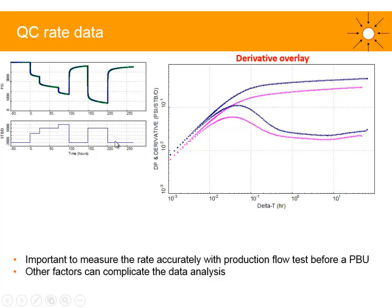In this case, what we have is an underestimated rate. Remember that we plot the rate-normalized pressure — delta P divided by Q — with units of PSI per stock tank barrels per day. If we underestimate Q, then the term delta P over Q is overestimated, and we end up with a shift upwards in the response. It is therefore important to measure the rate accurately via a test separator or an MPFM before each PBU.